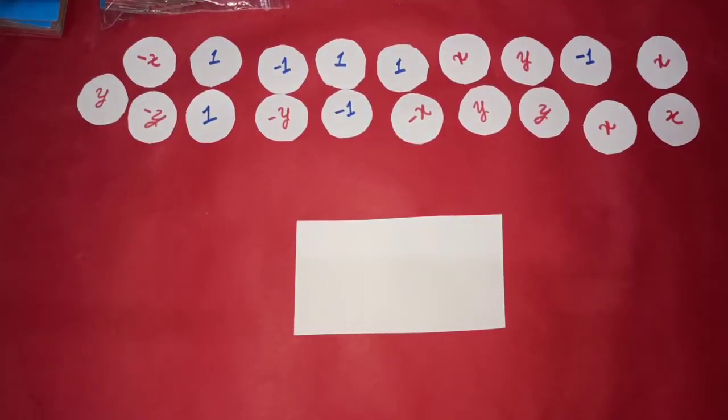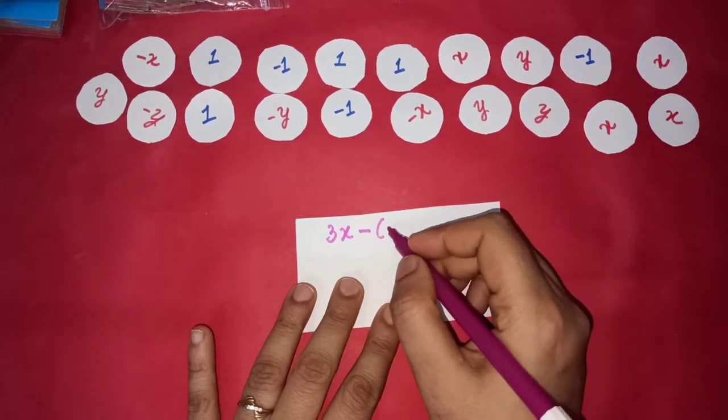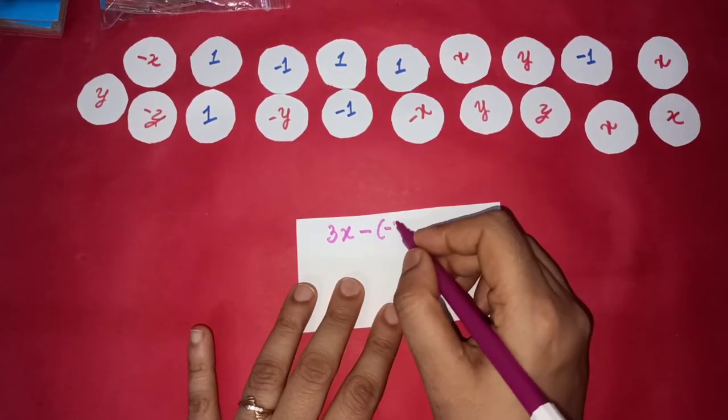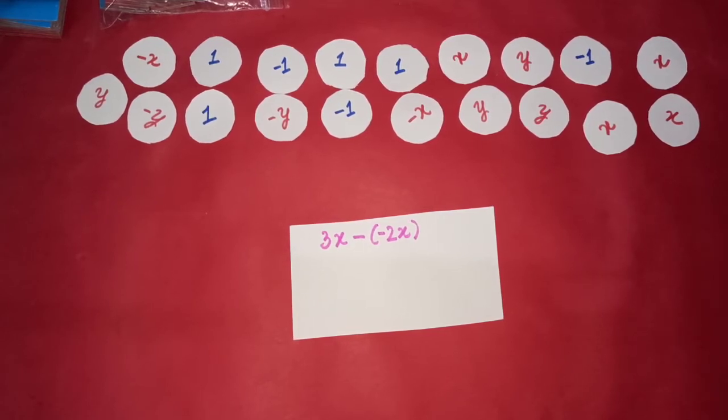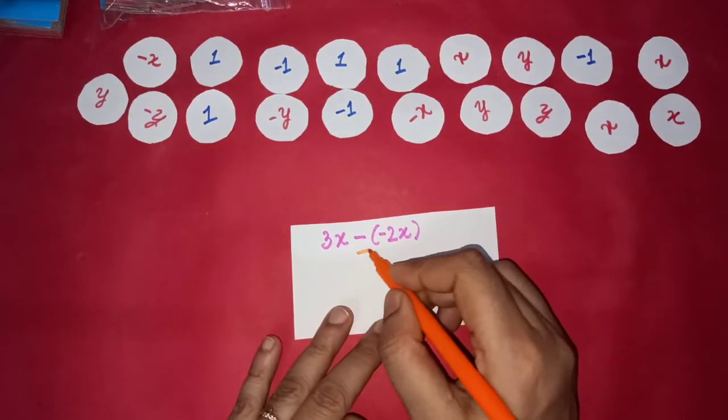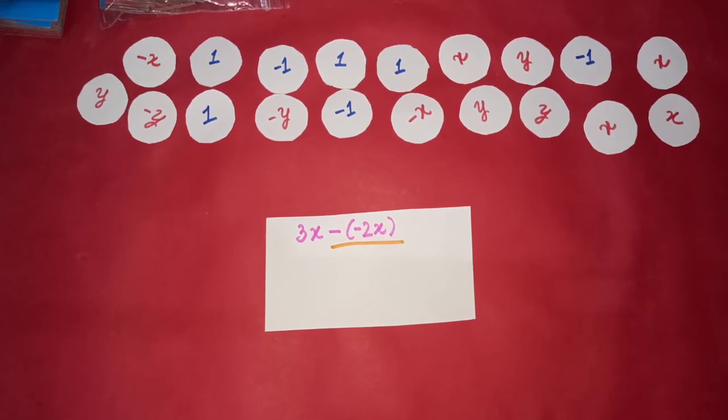Let's take another problem which is 3x minus negative 2x. So that means we have to take away 2 negative x's from 3 positive x's. So just concentrate on this part now. Now, what does this suggest? That after taking, that we have to flip, we have to take negative of negative 2x.